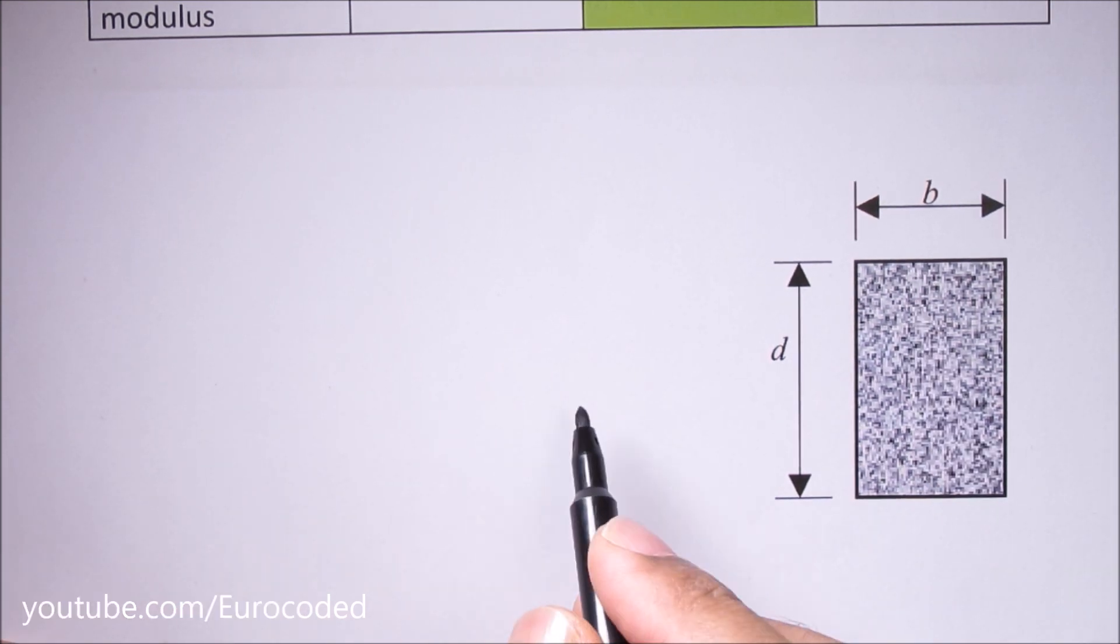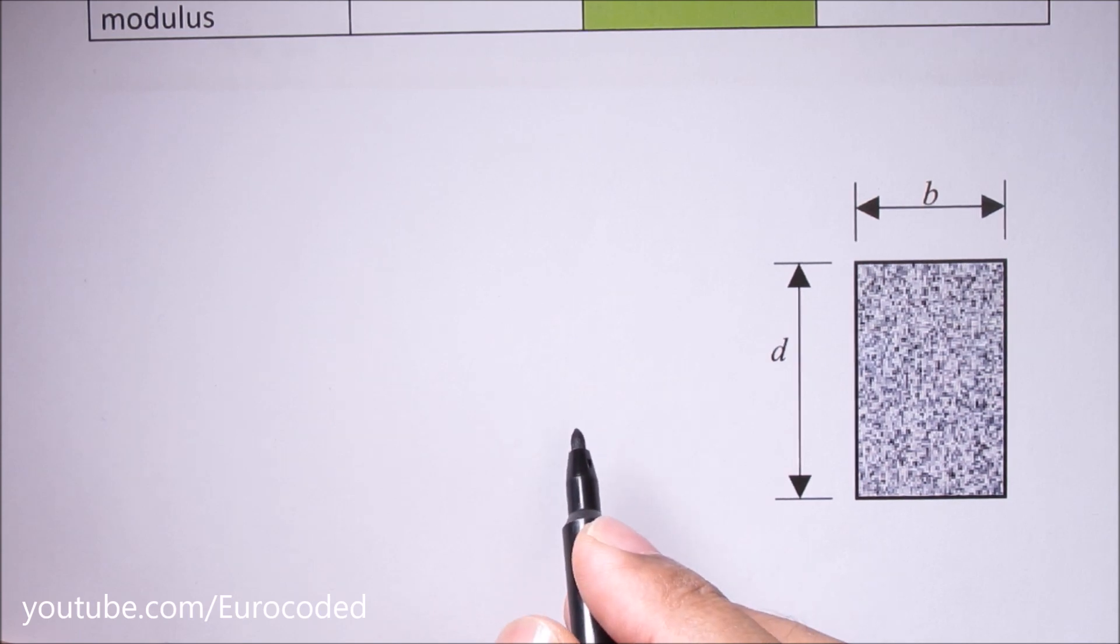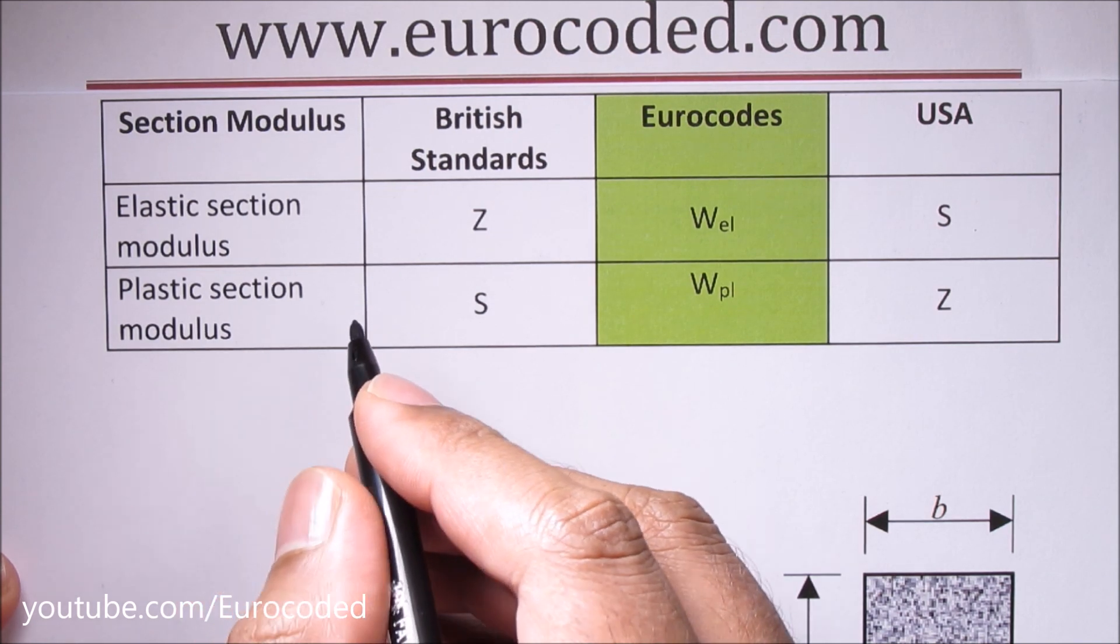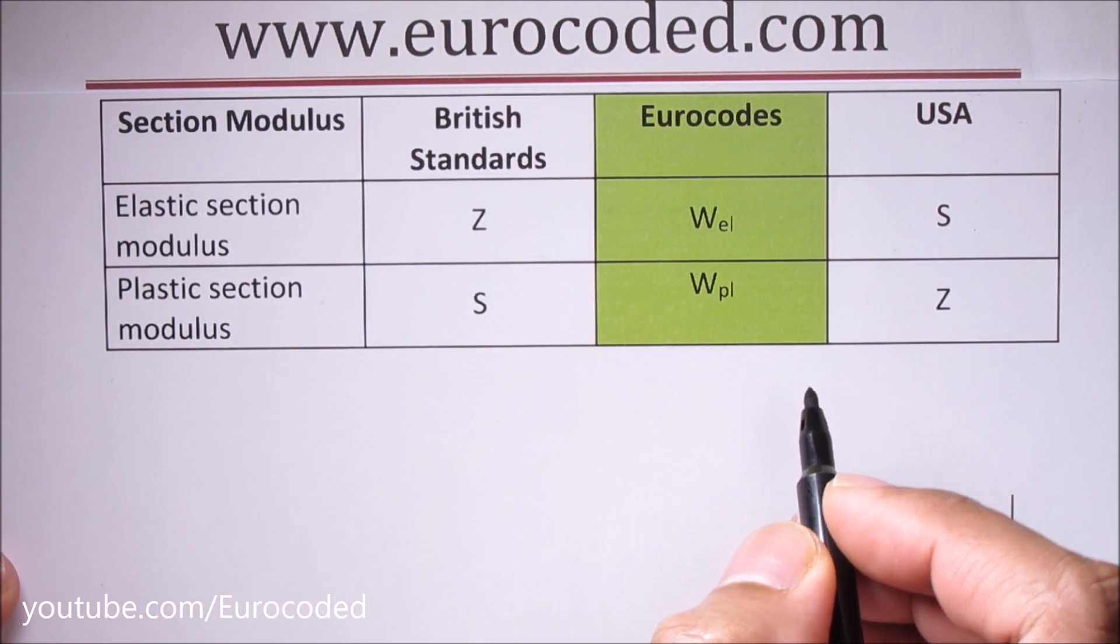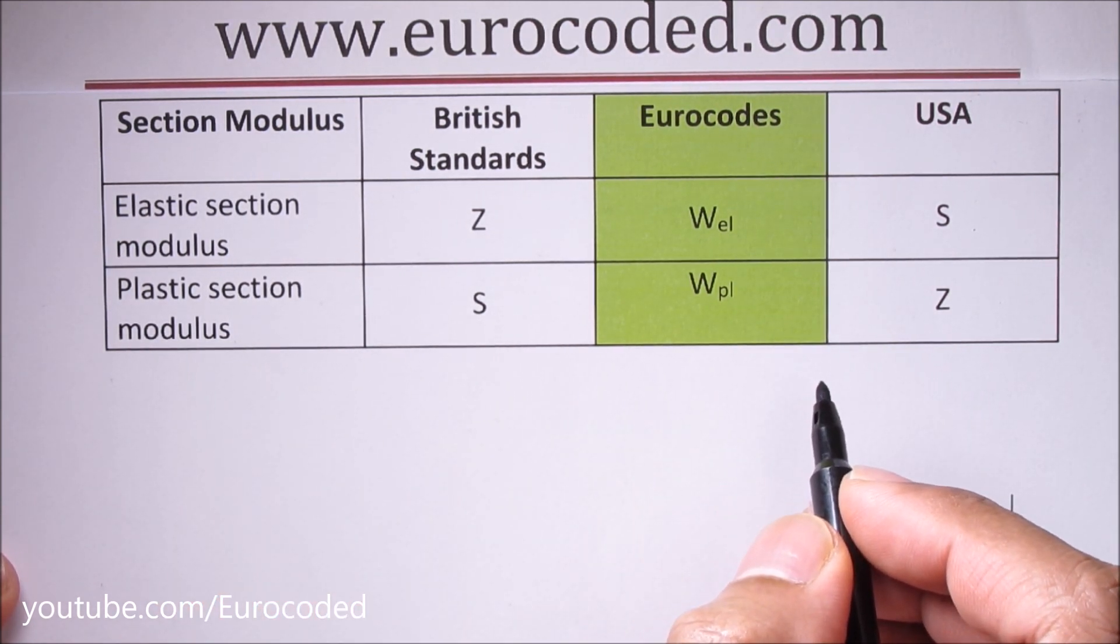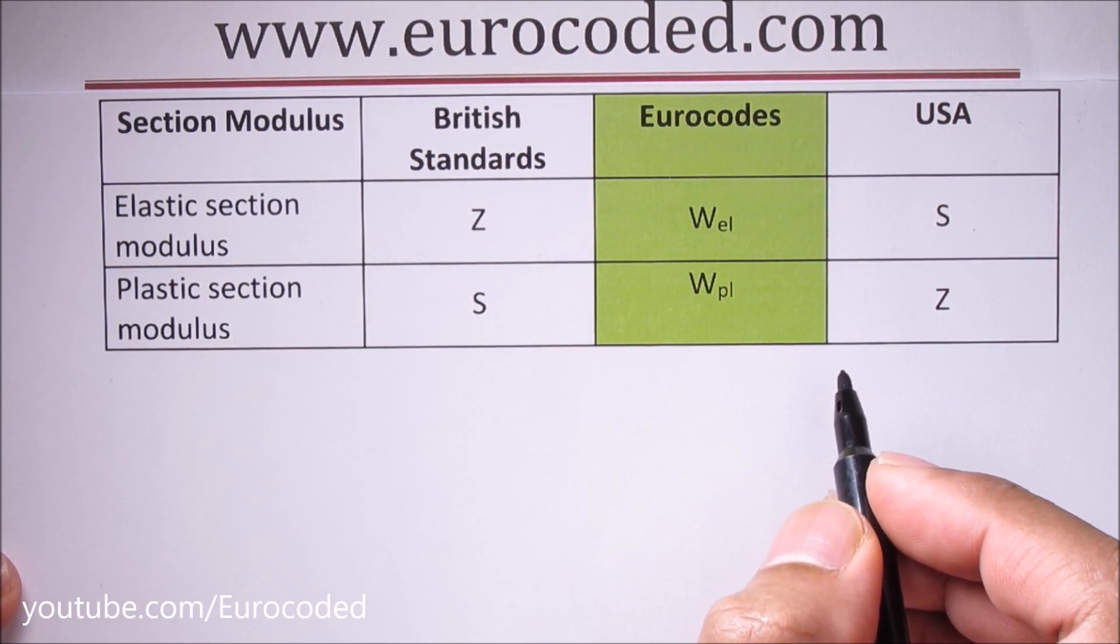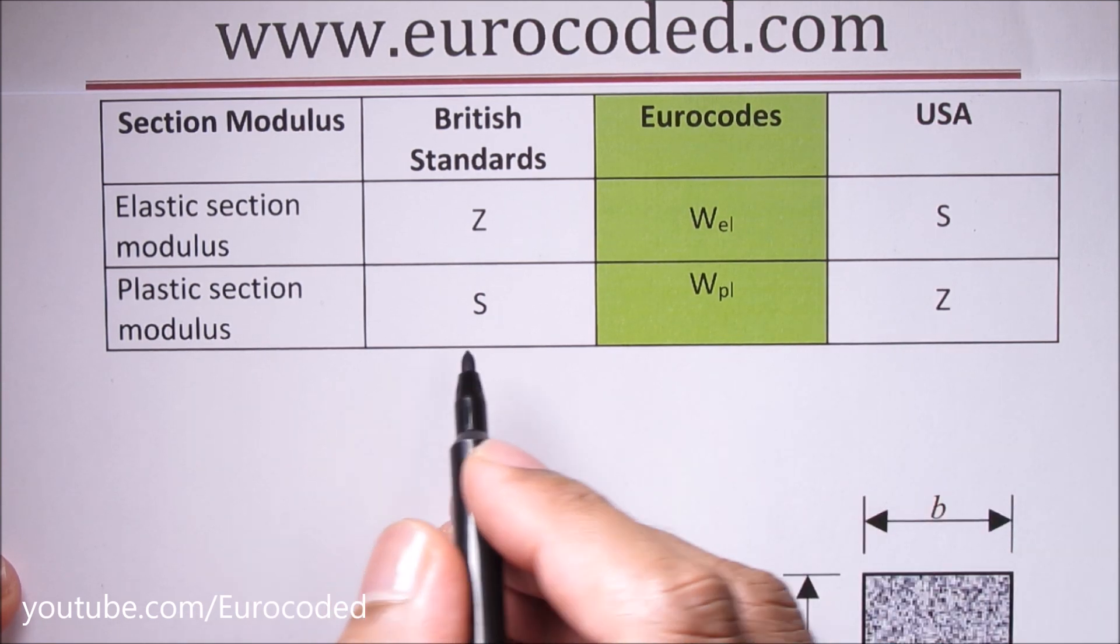There are two types of section moduli: the elastic section modulus and the plastic section modulus. When it comes to notation, especially when you read textbooks or look at examples, it might be a bit confusing because there are different notations in use in different countries.